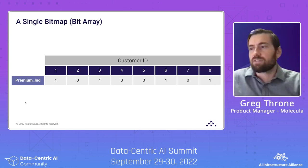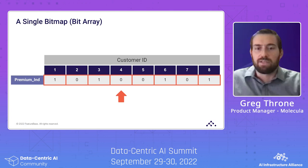As you can see highlighted in red here, this is what an actual bitmap is. Note this is the transposed view of a traditional table in order to better visualize what a bitmap is. And it's easy to visualize a bitmap as an array of binary values, which is also why bitmaps are referred to as bit arrays.